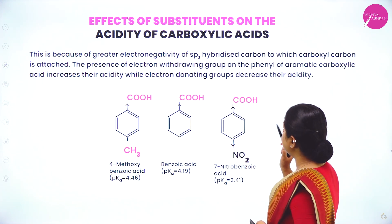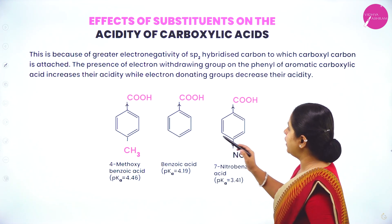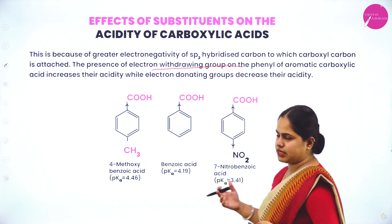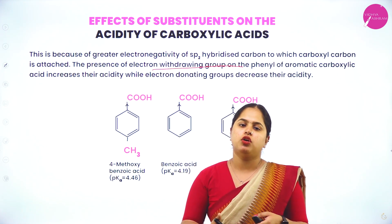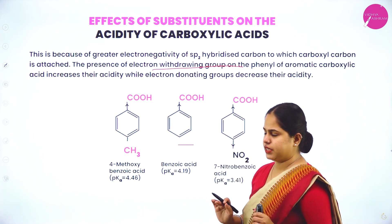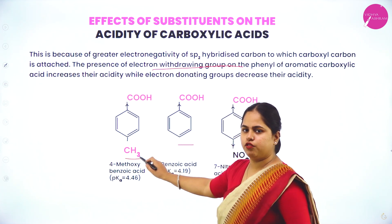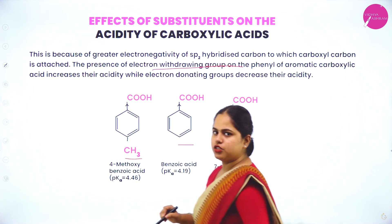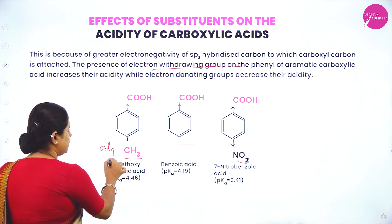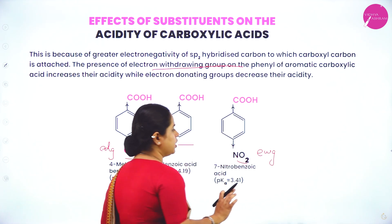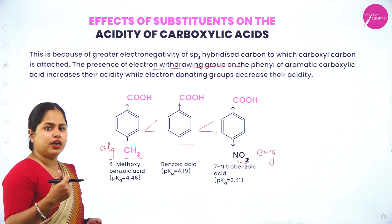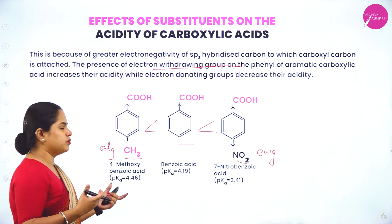This is because of the greater electronegativity of the sp2 hybridized carbon to which the carboxyl carbon is attached. In aromatic carboxylic acids, electron withdrawing groups on the phenyl ring increase acidity while electron donating groups decrease acidity. Comparing benzoic acid, 4-methoxybenzoic acid (electron donating methoxy), and nitrobenzoic acid (electron withdrawing nitro): the nitro-containing acid has the highest acidity, then benzoic acid, then the one with the electron donating group.